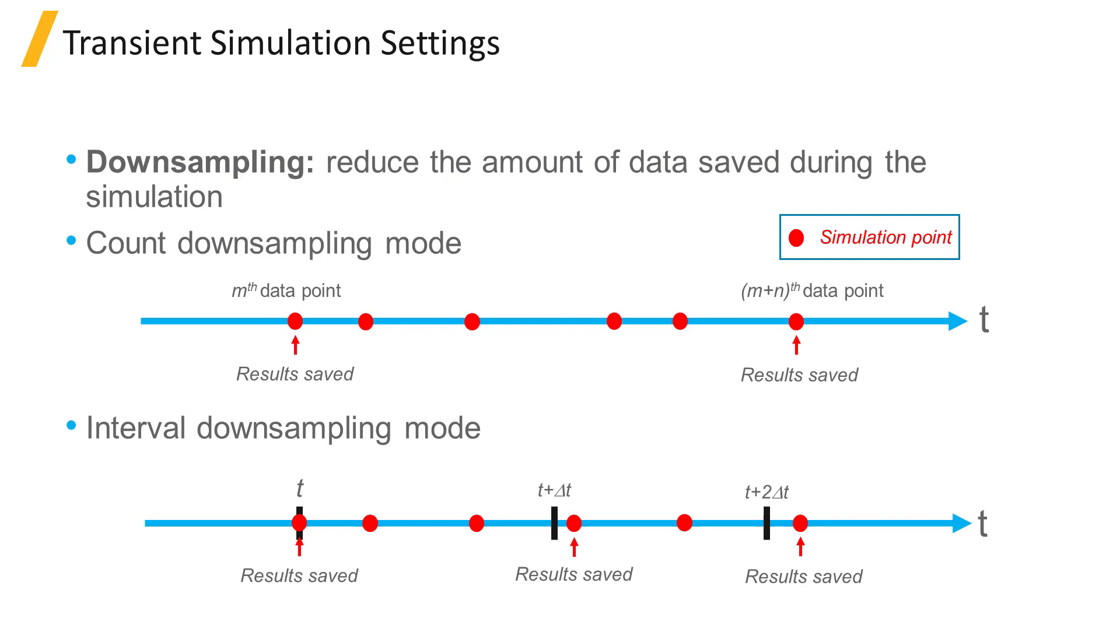Downsampling is used to reduce the amount of data saved during the simulation, particularly when using a very small step size. There are two downsampling modes available, interval and count. Having a downsampling with count value n means that only the results at every n points in the simulation will be saved.